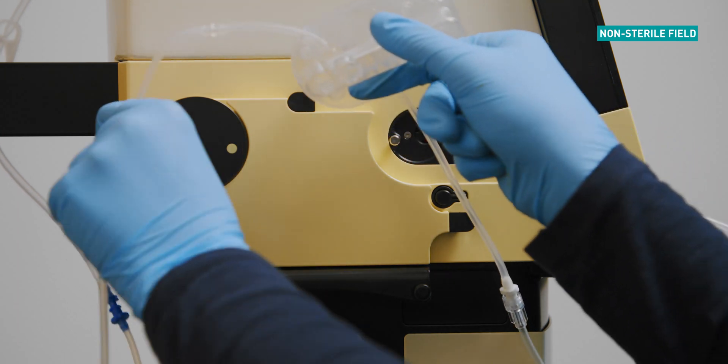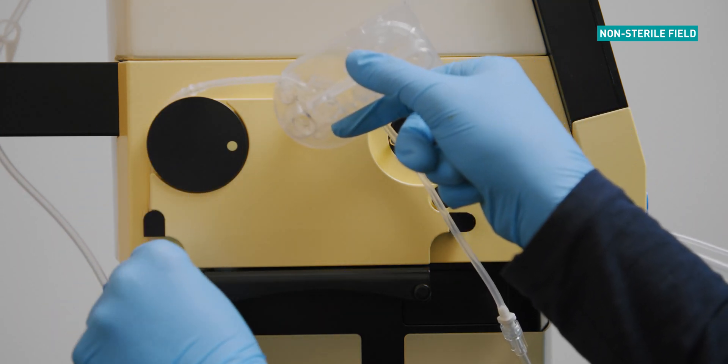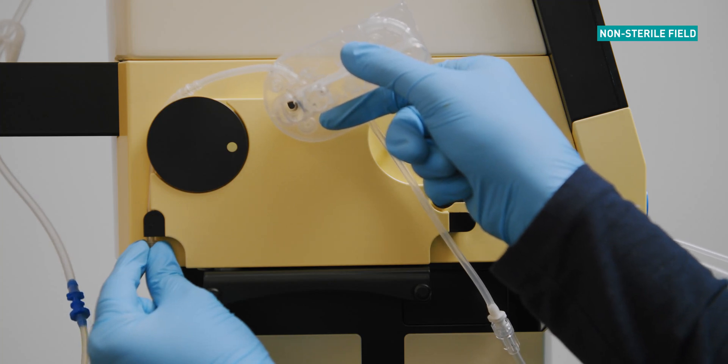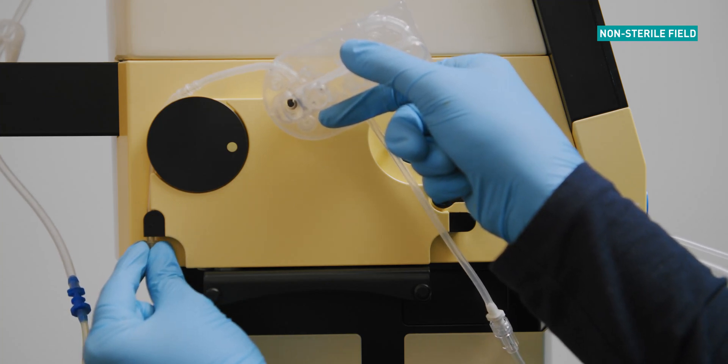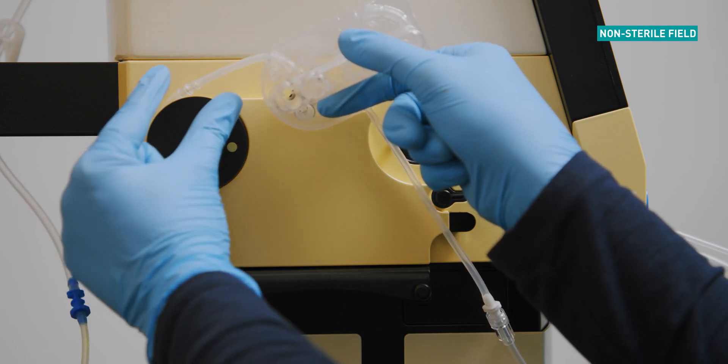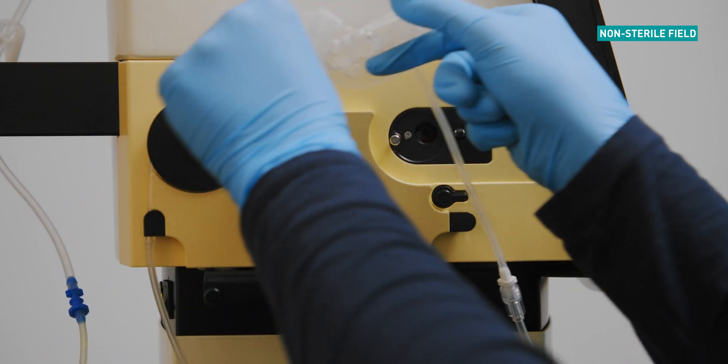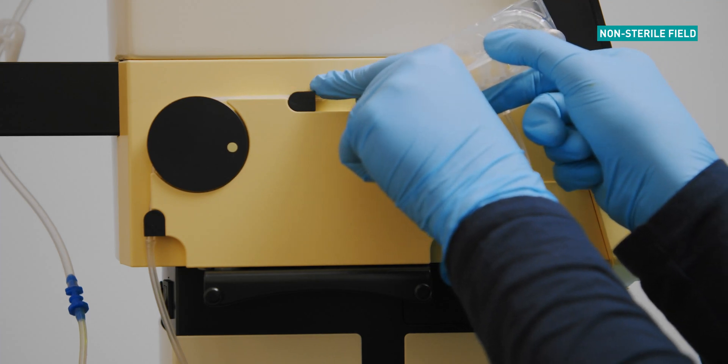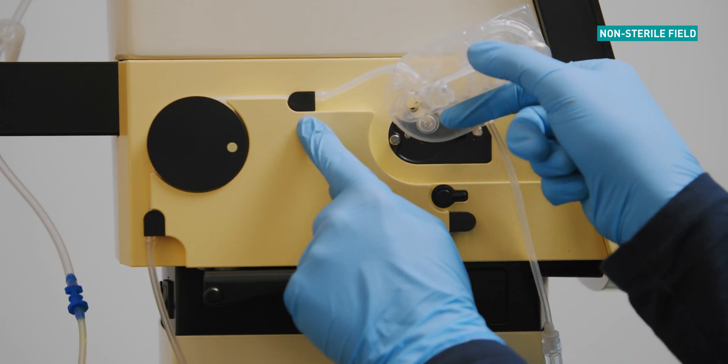Insert the locking mechanism into the first holding mount. Right hand holds the cassette and left hand makes a loop with the aspiration line. Grasp the second locking mechanism and gently pull the tubing over the pump wheel and secure into the second holding mount.